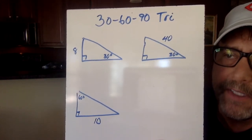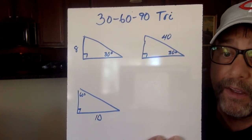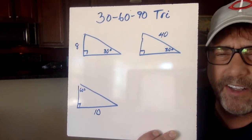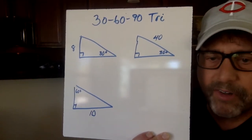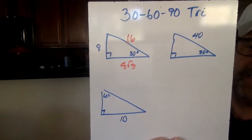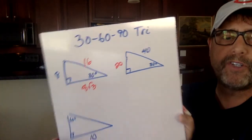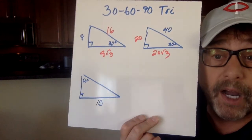30-60-90: short to medium, you take it times square root of 3. Short to hypotenuse, you double it. When you start with the hypotenuse, cut it in half — now you have the short — then short to medium, take it times root 3. Medium to short, you divide by square root of 3, and now it gets a little tricky. Divide by root 3, multiply by root 3 over root 3: you get 10 root 3 over 3. And then to double it for the hypotenuse, it is 20 root 3 over 3.